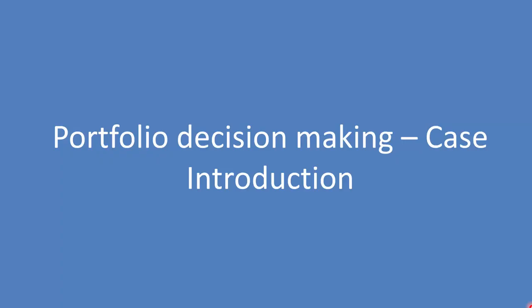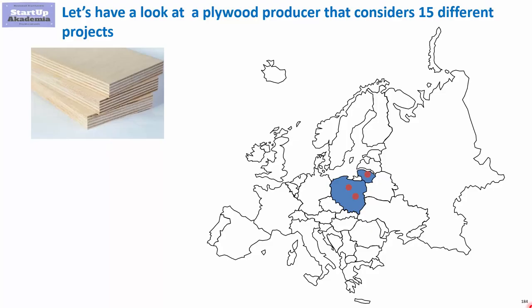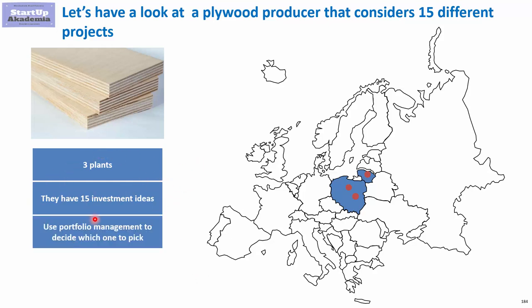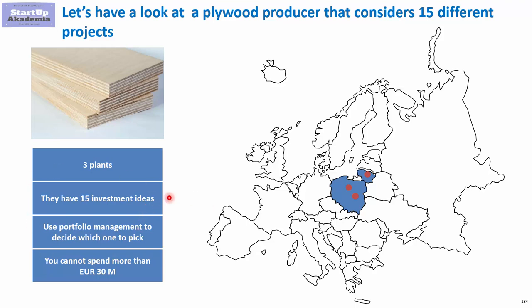Let's move to the case study to see how to apply this framework in practice. We will use the case of a plywood producer. This producer has three plants and has identified 15 investment project ideas. We'll use portfolio management to decide which ones to pick, keeping in mind that we cannot spend more than 30 million euros on all projects combined.